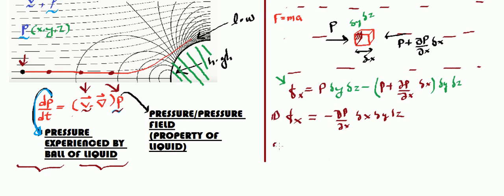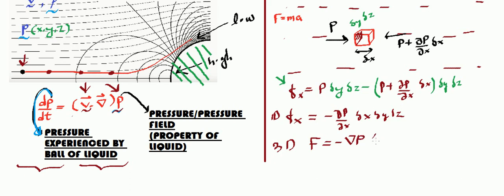What will happen in 3D? In 3D, if I consider all the forces Fx, Fy, Fz and write them as one net force, then the net force experienced by this liquid equals minus, and since this is the rate of change of pressure with respect to space, we are considering a pressure field. So in 3D I can write it as minus gradient of P times delta x delta y delta z.